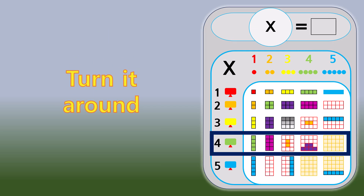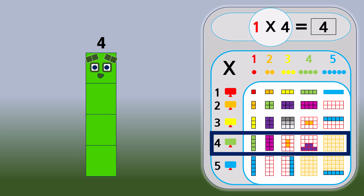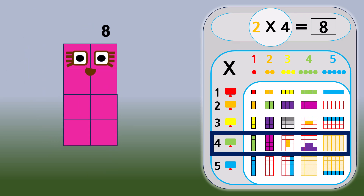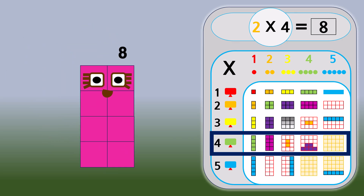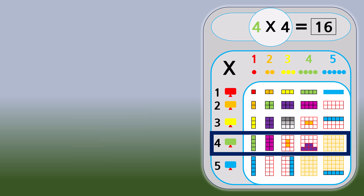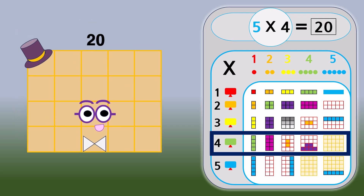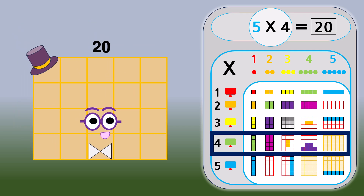Turn it around. 1 times 4 equals 4. 2 times 4 equals 8. 3 times 4 equals 12. 4 times 4 equals 16. 5 times 4 equals 20.